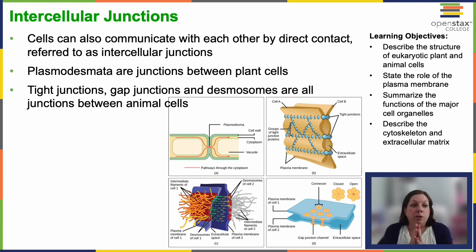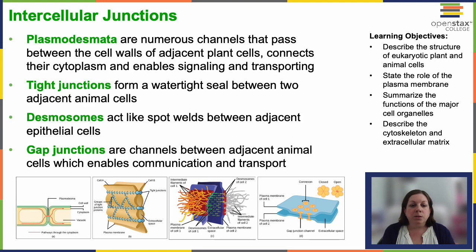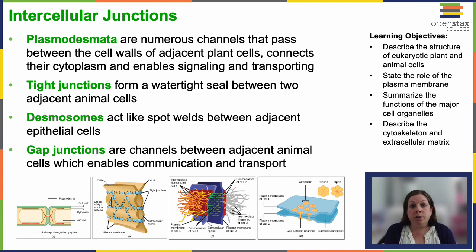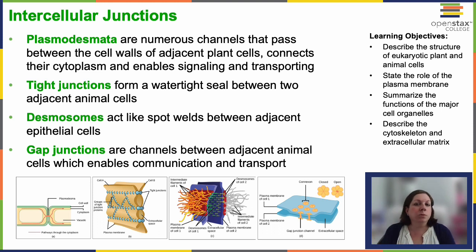From cell to cell, we have special junctions. Plasmodesmata are junctions between plant cells — channels between the cell walls of two adjacent plant cells — allowing communication and flow of nutrients. Most importantly, if a cell in the plant experiences stress like being cut, it sends a signal to other cells letting them know something happened. We see this in touch-me-not plants, where you touch the cell and it signals and the whole plant retracts.